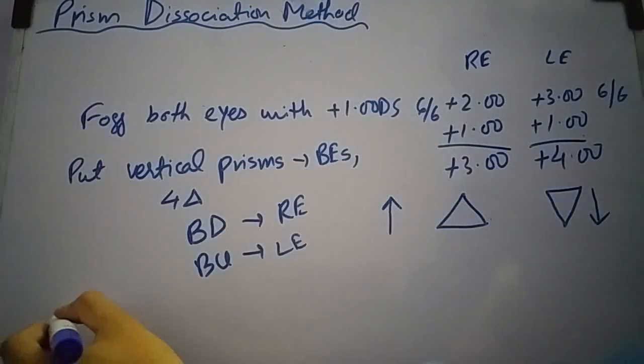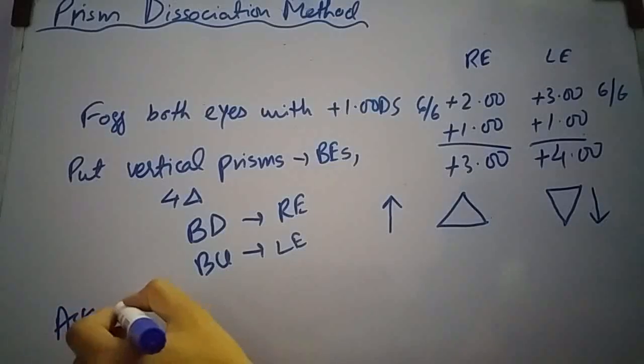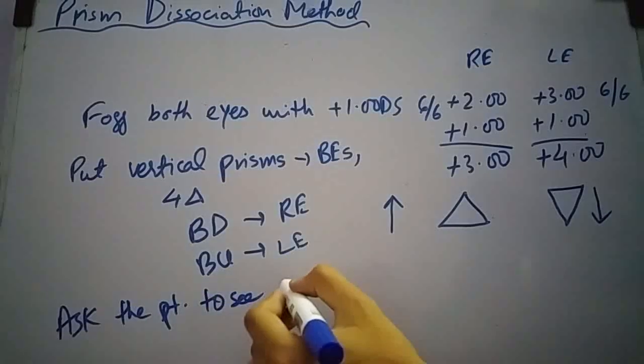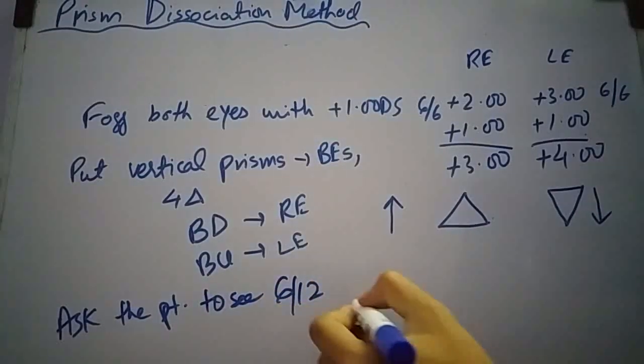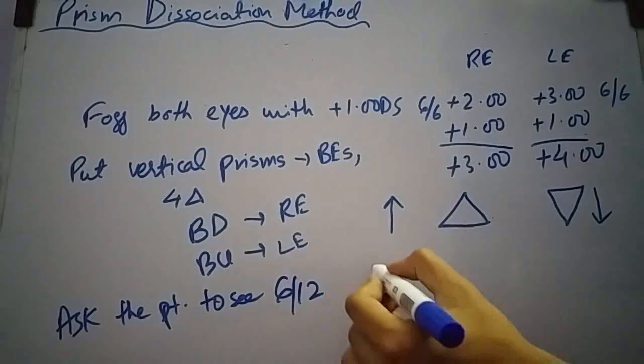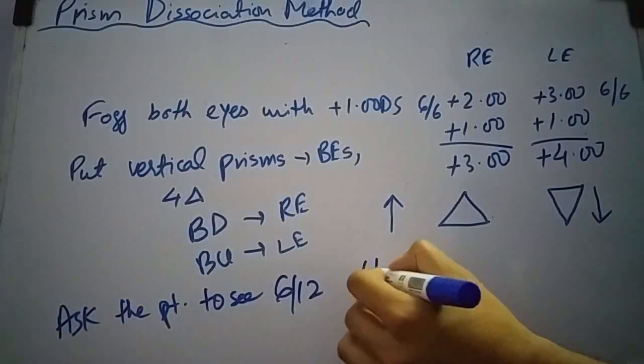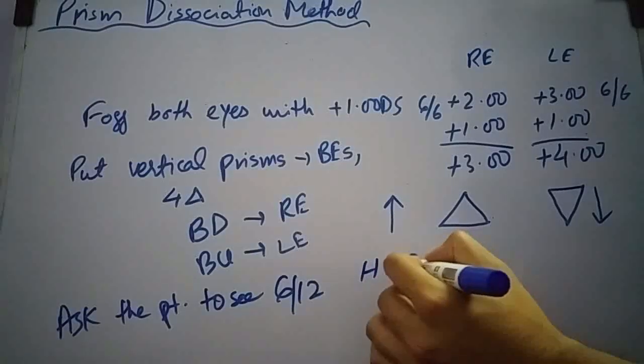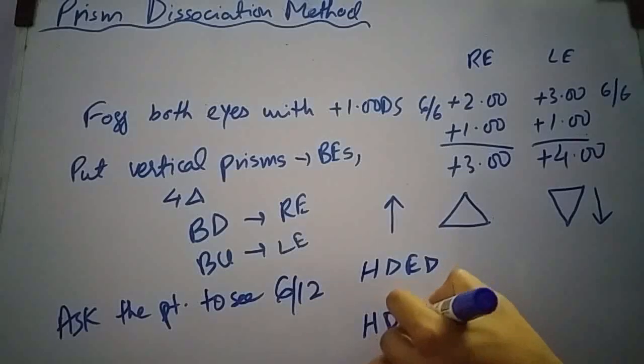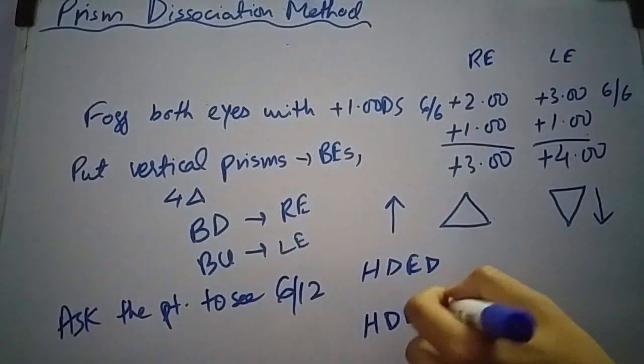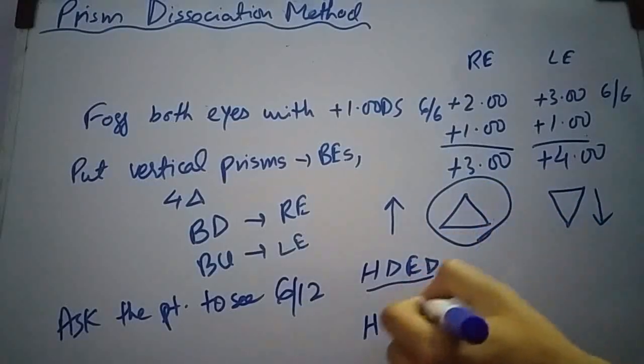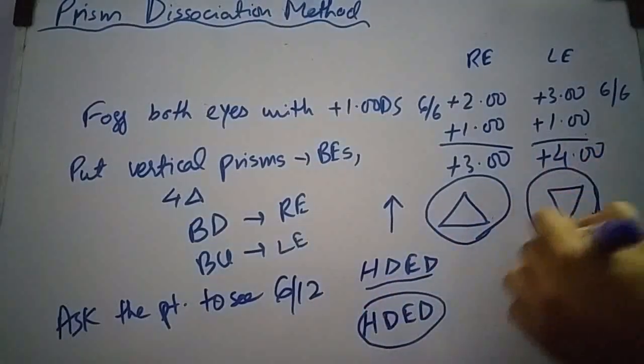Now ask the patient to see 612 line of Snellen chart. Now the patient will see two lines of 612. One is upward. Let's suppose this is 612 line and one is downward. The upward image is due to prism in front of right eye and downward image is due to prism in front of left eye.